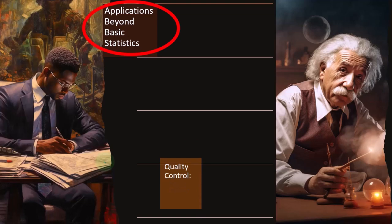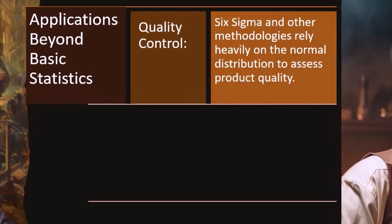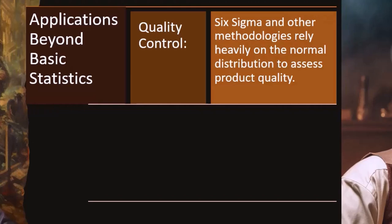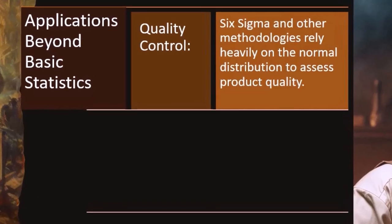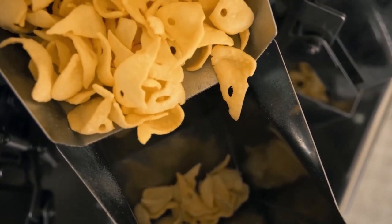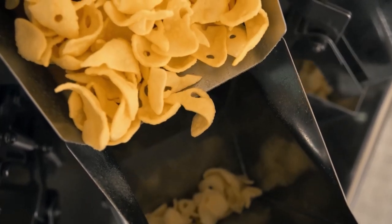Applications beyond basic statistics. We've got quality control. Six Sigma and other methodologies rely heavily on the normal distribution to assess product quality. Many products that are created have a volume component. When you're talking about a product where all the products need to be the same, and you're trying to crank out a whole lot of them, like potato chips, or candy, like Tootsie Rolls, then all of the products that are being output should be the same, but clearly they're still going to be a little bit different. If you're thinking about how many chips are in a particular bag, you might weigh the bag, and one bag is going to weigh a little bit different than the other bag.